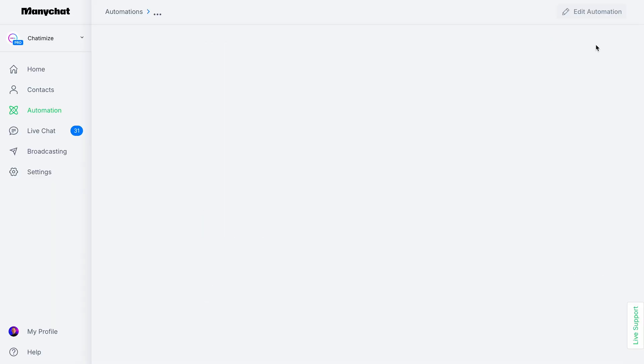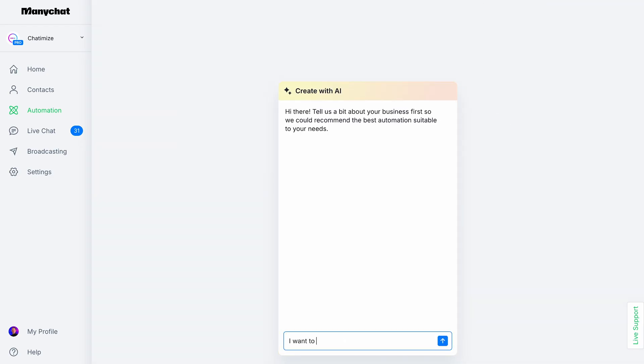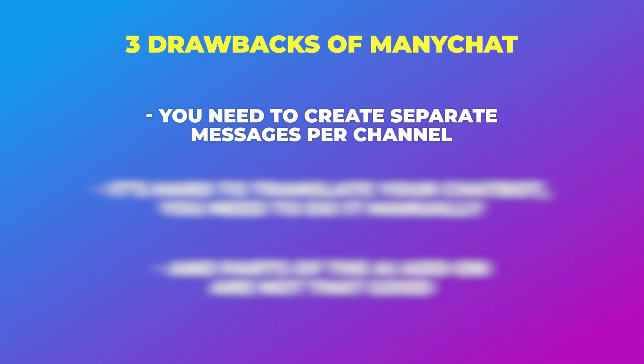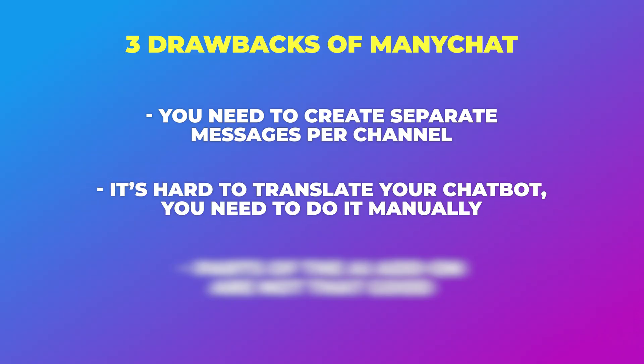For more high-level users, ManyChat also offers an AI add-on, which gives you access to AI intents, an AI flow builder assistant, and the AI step. And if you want to get started with creating an Instagram DM automation with ManyChat, I have a separate video on my YouTube channel — I highly recommend checking it out. But there are also three drawbacks of ManyChat. The first is that you need to create separate messages per channel, so if you want to create automations on multiple channels, there are better solutions out there. And likewise, if you want to create automations in multiple languages, you basically need to duplicate all of your flows, which makes it harder to maintain.